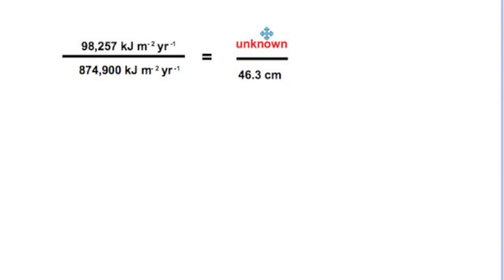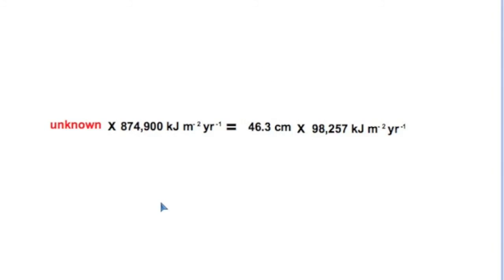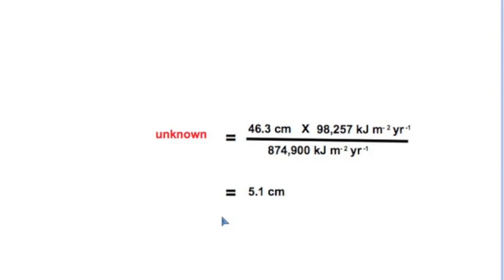And this value here would be the length of the box for the first level consumer. It's the unknown. To solve for it, we must cross multiply, getting to this relationship. Then solving for the unknown, it comes to an answer of 5.1 centimeters.